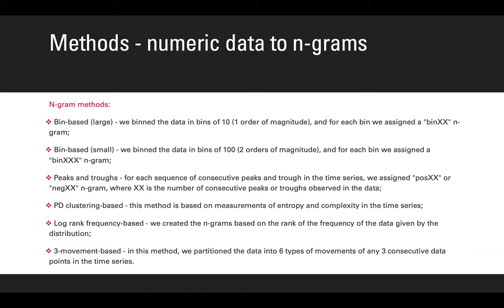The first one, bin-based large, we binned the data in bins of 10, basically one order of magnitude, and for each bin we assigned a bin-XXX character n-gram. The bin-based small, in this method we binned the data in bins of 100, basically two orders of magnitude, and for each bin we assigned a bin-XXX character n-gram.